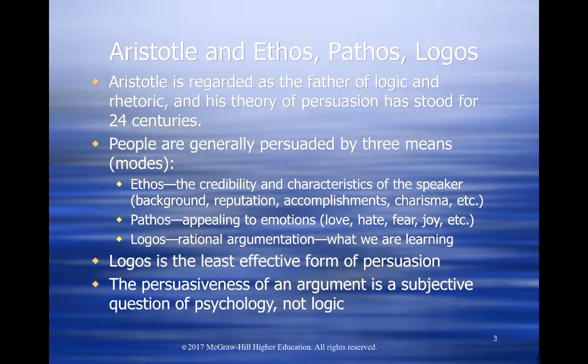Now that we know what is and isn't an argument, let's look at persuasion. Our ideas about how people are persuaded haven't changed much in 24 centuries, ever since the Greek philosopher Aristotle wrote his treatise called The Rhetoric. In it, he says that people are persuaded in three ways. First, they are persuaded by ethos — the credibility and characteristics of whoever is attempting to persuade them. People pay more attention and are more likely to believe someone who seems credible due to their background, reputation, accomplishments, and maybe even their charisma.